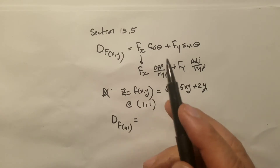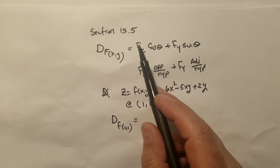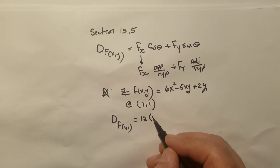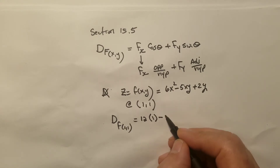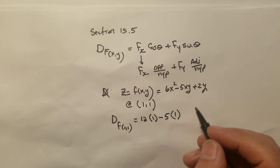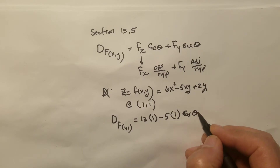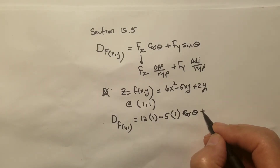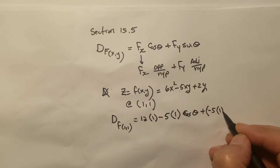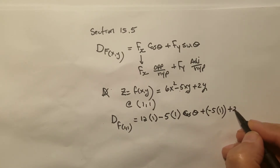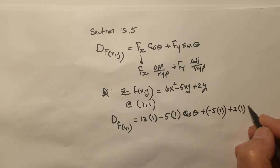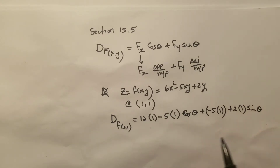To find the directional derivative of that surface at the point (1, 1), I need the partial derivative with respect to x at that point. The partial derivative with respect to x is 12x − 5y, which at (1, 1) gives 12(1) − 5(1) = 7. This is multiplied by cosine theta.